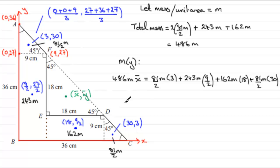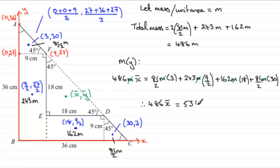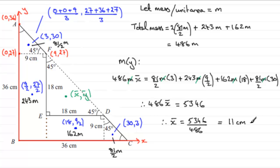M cancels from every term, leaving 486 × x-bar = 5,346. Dividing 5,346 by 486 gives x-bar = 11. So the centre of mass is 11 centimetres from edge AB.